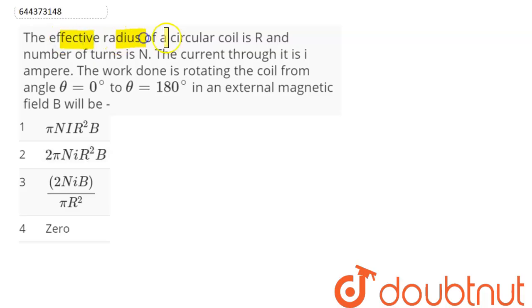Question is: the effective radius of a circular coil is R and number of turns is N. Current through it is I ampere.